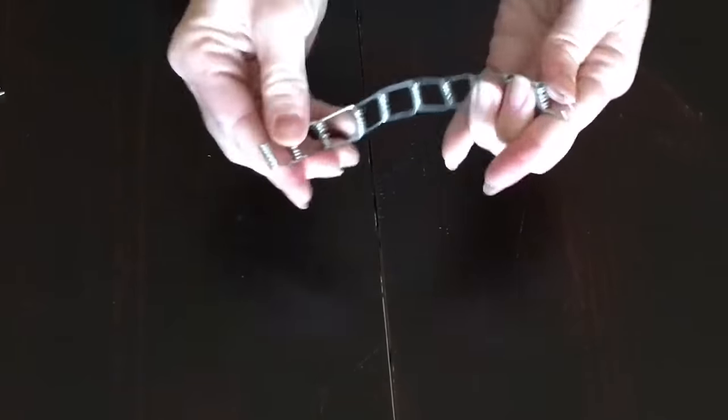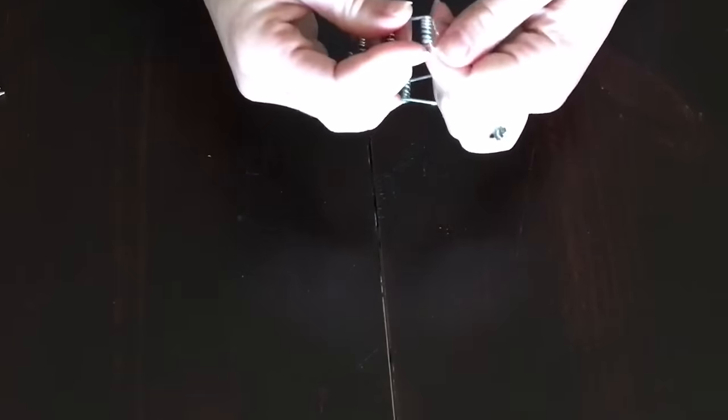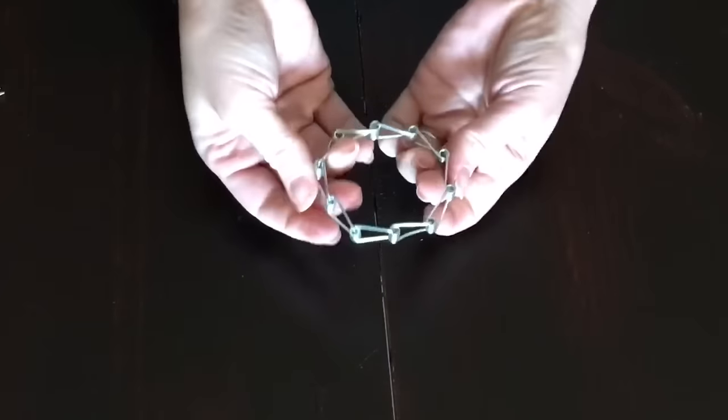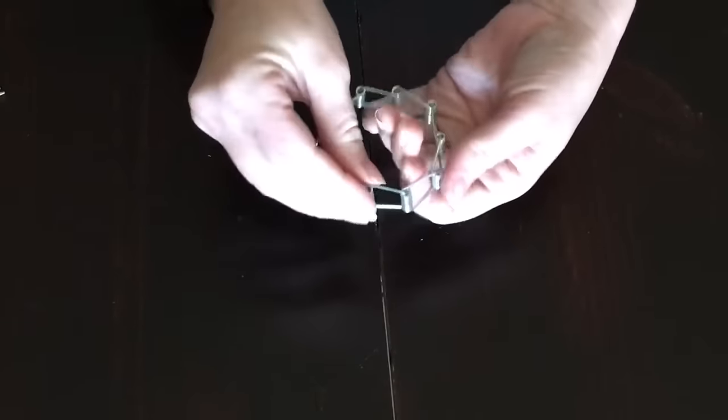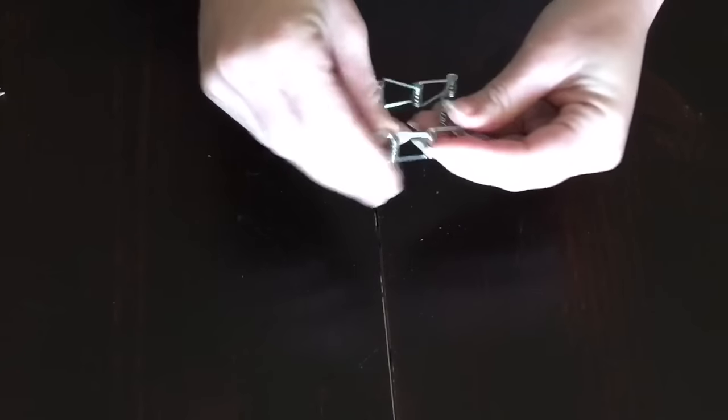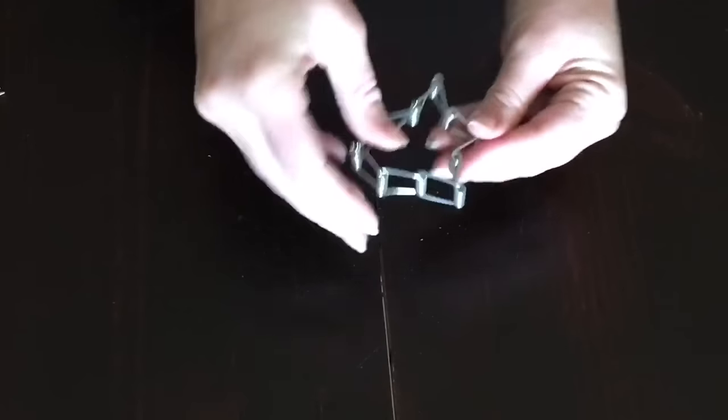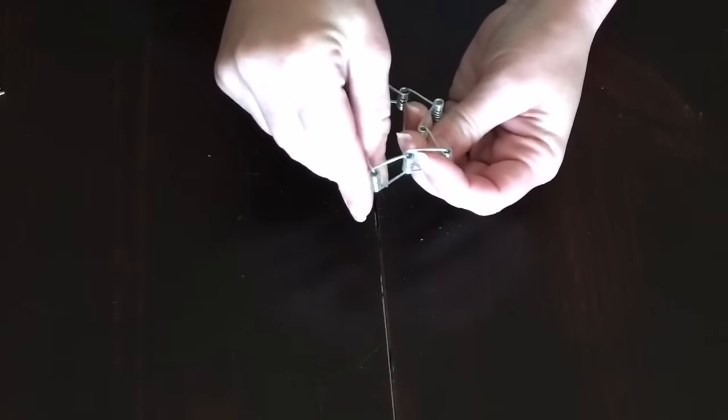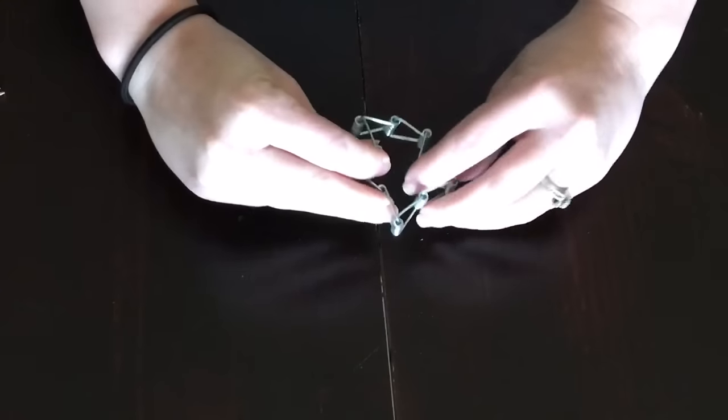Once they're all together, you're going to take your first and your last and you're just going to connect them. There you go. So you're going to end up with just a circle of all connected, and all you're going to do is fold them to make the points of your star. This is very fun and very simple to do.